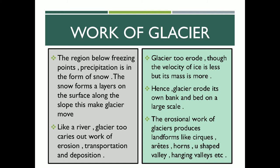First point: in the region below freezing point, precipitation is in the form of snow. Glacier kahan found hote hain — glacier us jagah pe paaye jayenge jahan ka temperature freezing point pe hoga ya freezing point se kam hoga. Us particular region mein precipitation of snow hota hai. This snow forms a layer on the surface along the slope, which makes the glacier move.